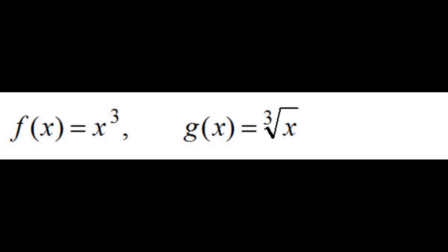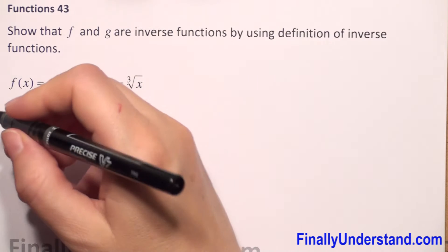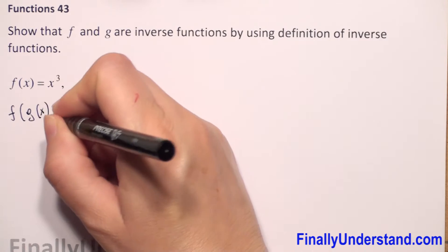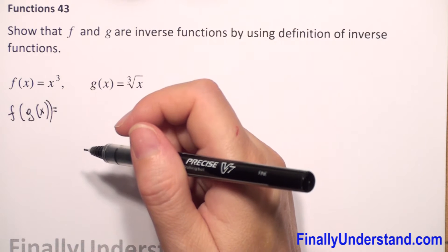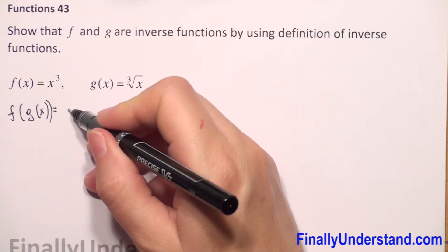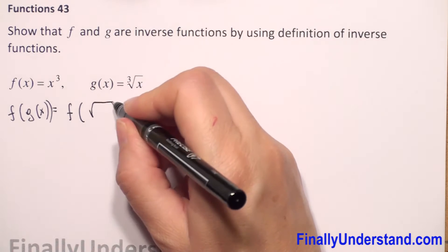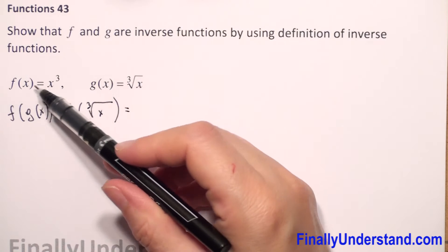We will show that f and g are inverse functions by using the definition of inverse functions. First, we will check if the compositions of f and g are equal to the identity function. For f composition of g, we rewrite g(x) and substitute it with the cube root of x.